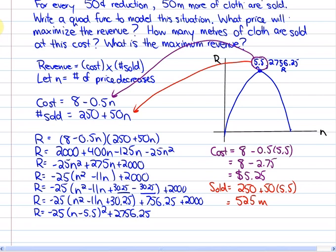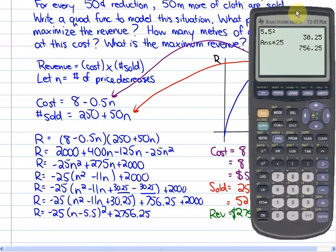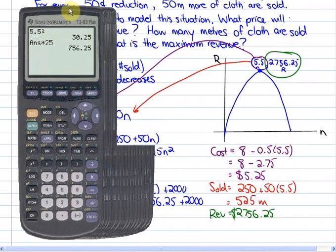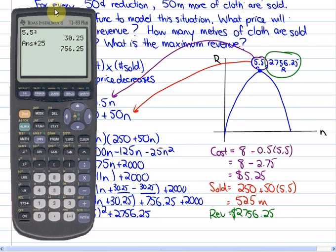And finally, the maximum revenue is already there for us. So, the maximum revenue will be $2,756.25. Just to confirm that, let me multiply the cost times the number sold, and we should get the revenue. $5.25 times 525 equals the revenue. Okay? So, that is that problem.